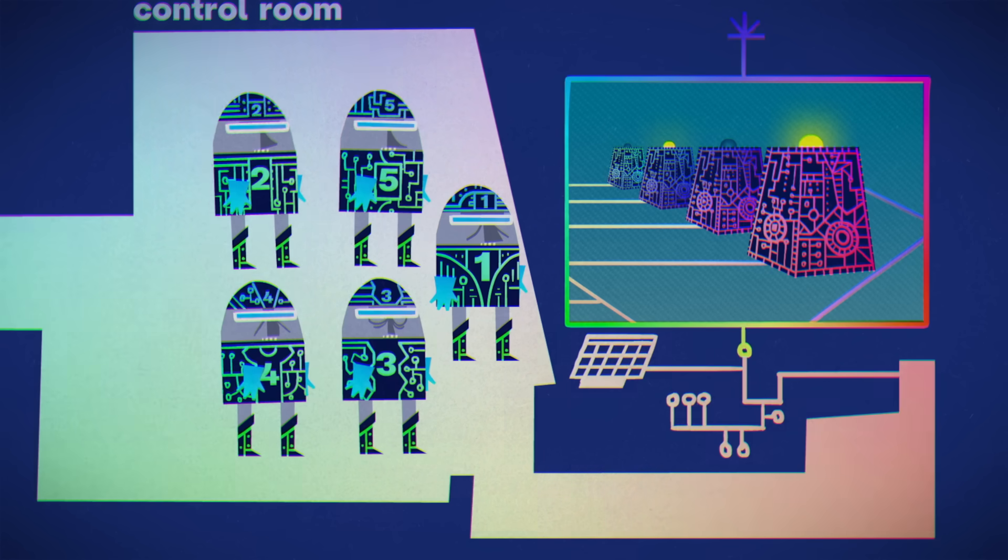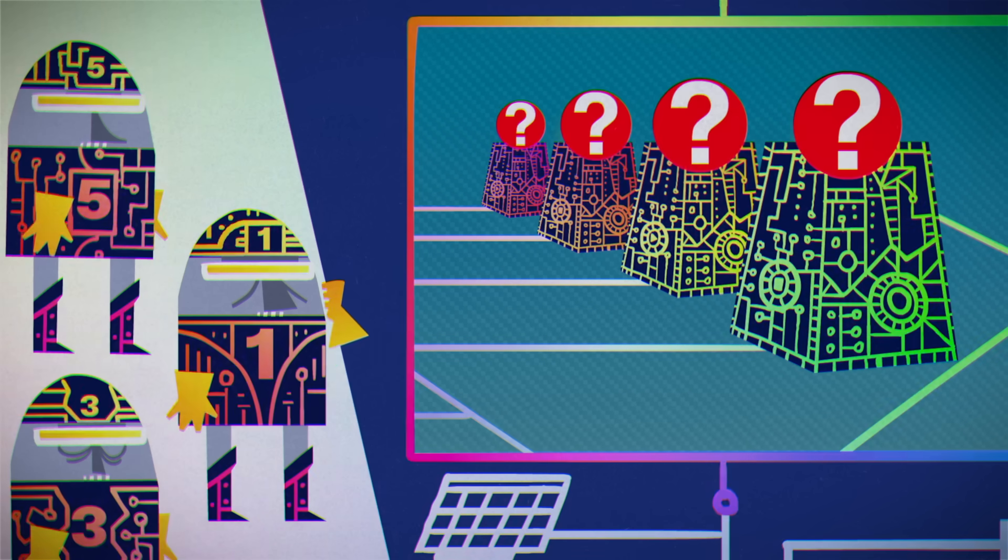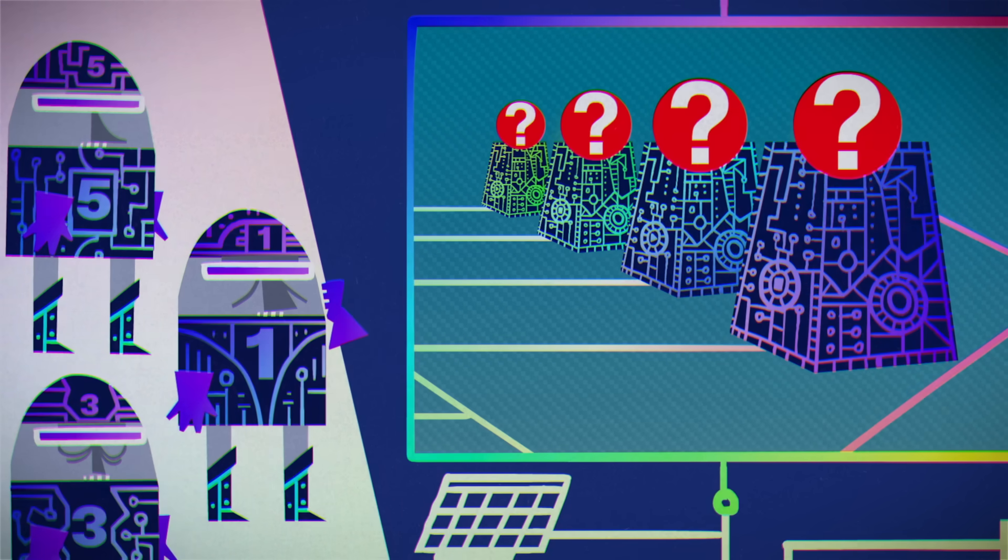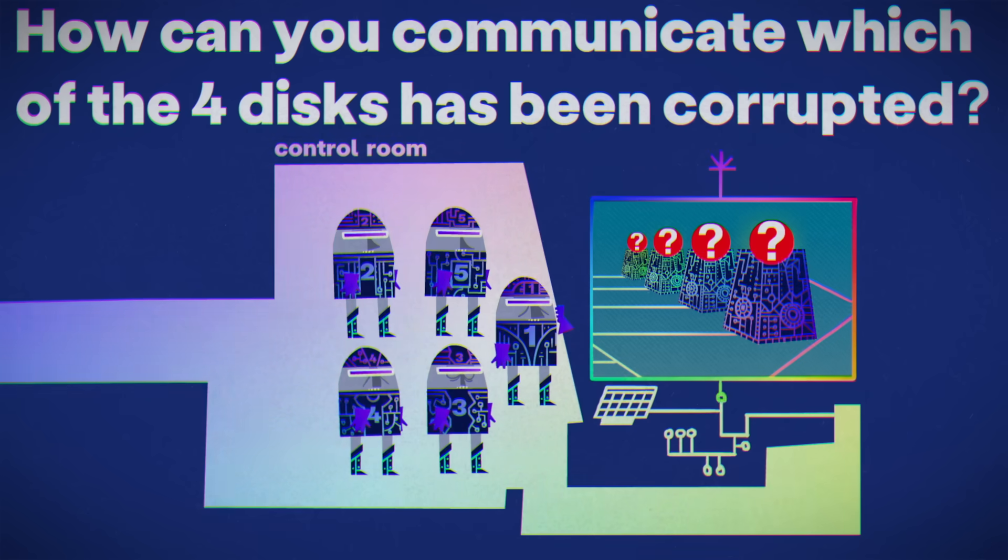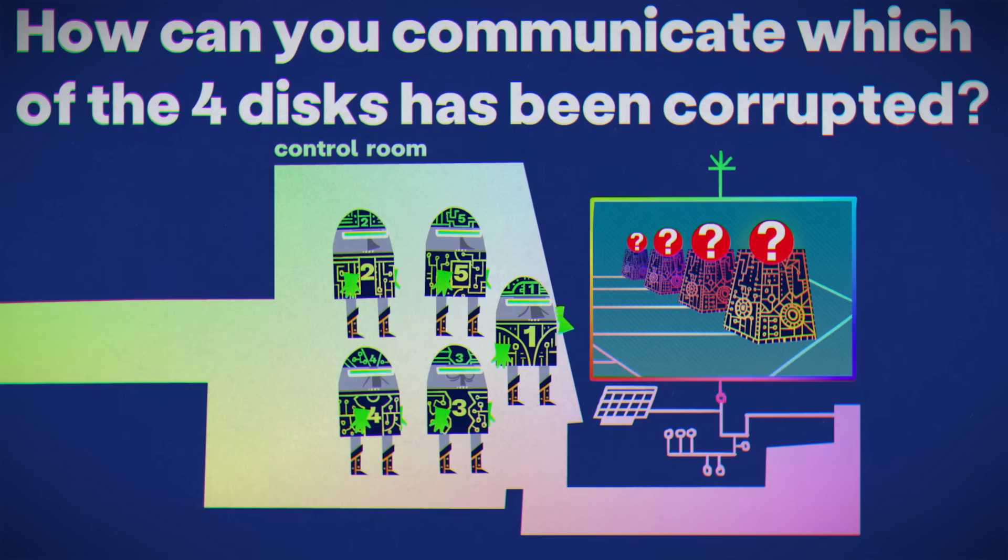The lights are only visible within the mainframe, so you won't know until you get there which, if any, are on. How can you communicate with your single action which of the four disks has been corrupted?